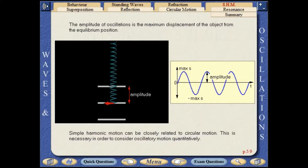Simple harmonic motion can be closely related to circular motion. This is necessary when considering oscillatory motion quantitatively.